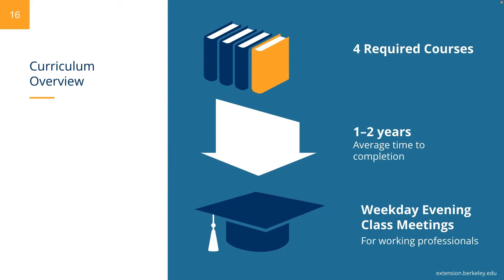As a general guideline, for every hour spent in the classroom, you should expect to spend about two hours outside of class time studying. So if you have a class that meets three hours a week, as these courses do, you'll be spending about six hours of studying for a total of nine hours per week per course. Because many of our students are working professionals who want Berkeley's academic quality, we offer courses in the evenings so that you can continue to work while you study.